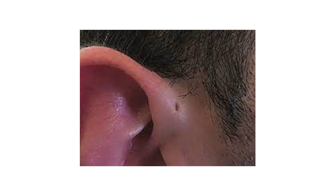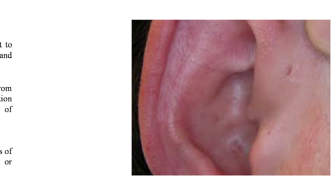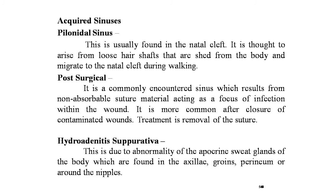Acquired sinuses include the pilonidal sinus, found in the natal cleft, thought to arise from loose hair shafts shed from the body that migrate to the natal cleft during walking — described in detail in a previous lecture. Post-surgical sinus is a commonly encountered sinus resulting from non-absorbable suture material acting as a focus of infection within the wound, more common after closure of contaminated wounds; treatment is removal of the suture. Hidradenitis suppurativa is due to abnormality of the apocrine sweat glands found in the axilla, groin, perineum, and around the nipples, characterized by recurrent abscesses that may discharge spontaneously, forming chronic discharging sinuses.